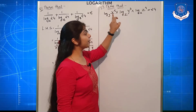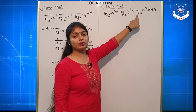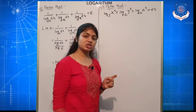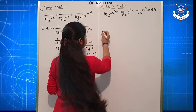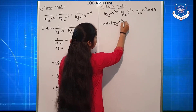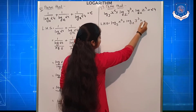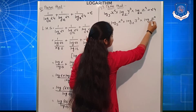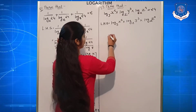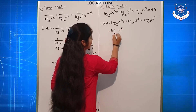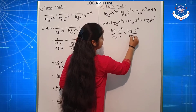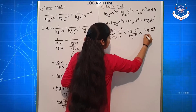Prove that: log(x²) to the base y, multiplied by log(y³) to the base z, multiplied by log(z⁴) to the base x, is equal to 24. Just as in the first question, we write LHS. Applying change of base, this becomes: log(x²) upon log y, into log(y³) upon log z, into log(z⁴) upon log x.